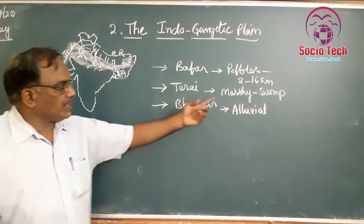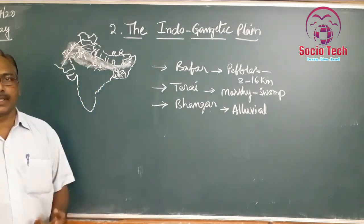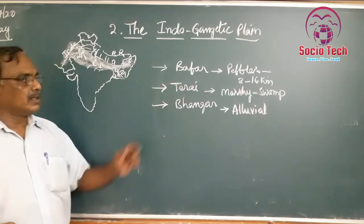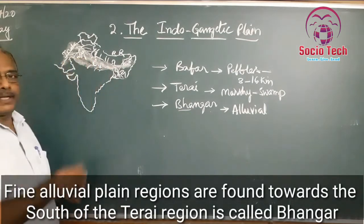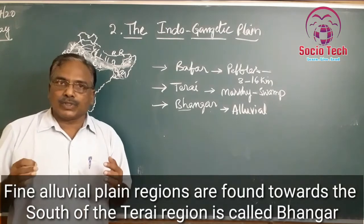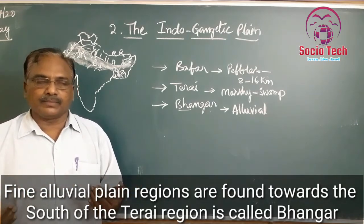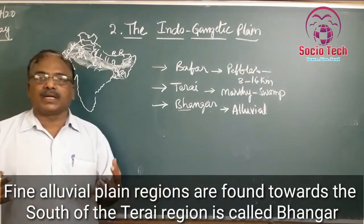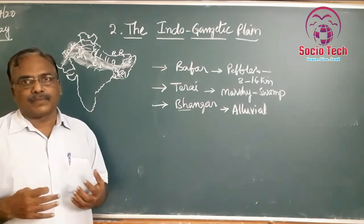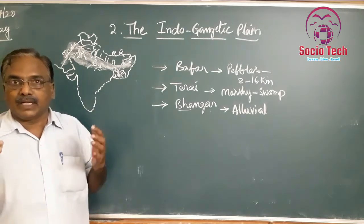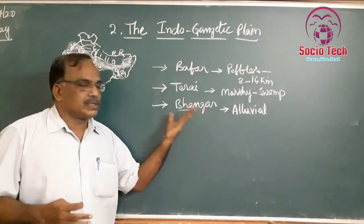To the south of Bhabar, we can see marsh and swamp plants — always wet conditions. This is the Tarai zone. Then comes the Bangar plain, composed of alluvial soils — older alluvium and newer alluvium. Bangar is very rich in alluvium and is responsible for agricultural prosperity.